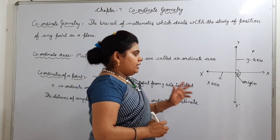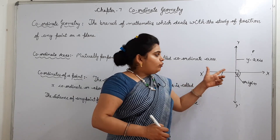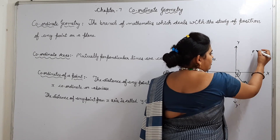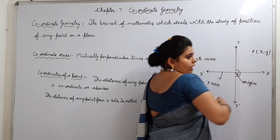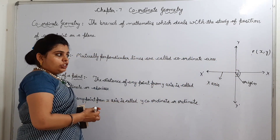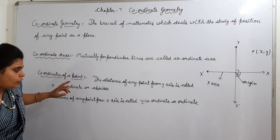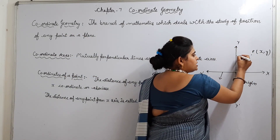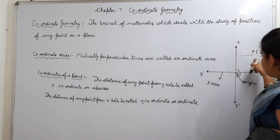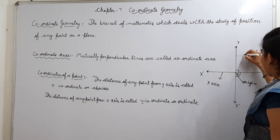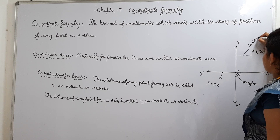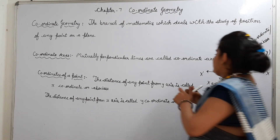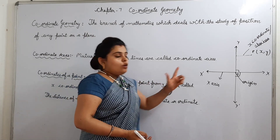Now, how will we use these axes for studying the location of any point? Suppose we have point P and we have to study its position. For studying the position of this point, we need coordinates. The distance of any point from the Y-axis - यह जो distance है इस point का Y-axis से - इसको हम बोलते हैं X-coordinate, also called abscissa. किसी भी point का Y-axis से जो distance होता है, वो X-coordinate होता है.